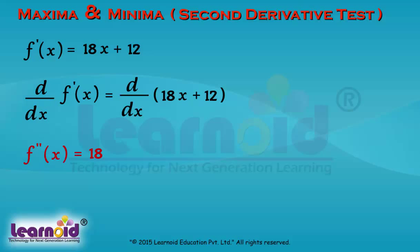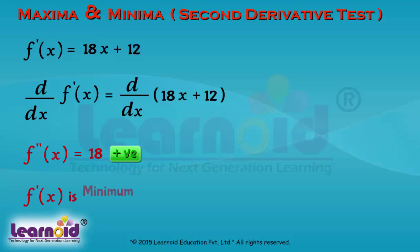As f''(x) is positive for all values of x, f(x) is minimum at x = −2/3.